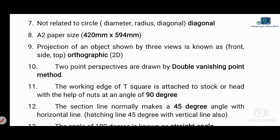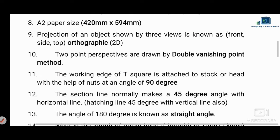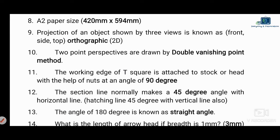Next question: the A2 paper size dimensions are 420 × 594 mm. For reference, A3 is 297 × 420 mm, and A4 is 210 × 297 mm. The A2 size is confirmed as 420 × 594 mm.